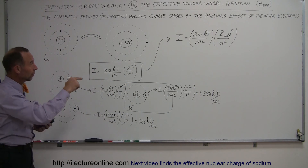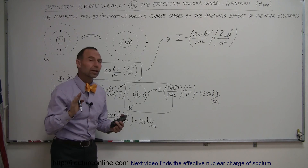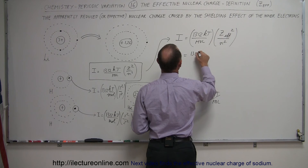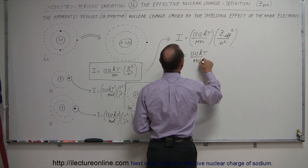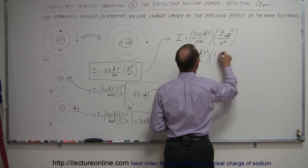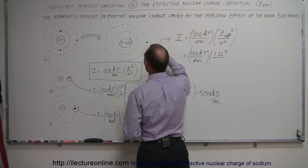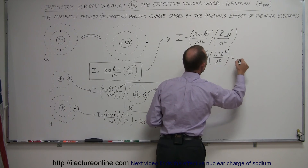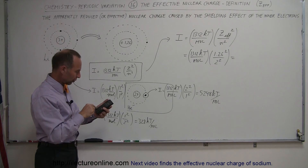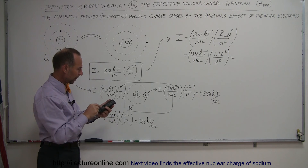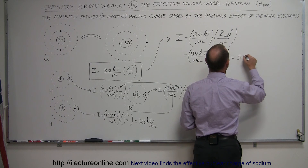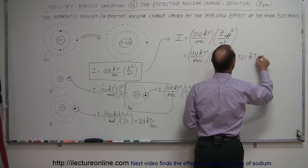Plugging in Z_eff = 1.26 and n = 2 (since the electron is in the second energy level): IE = 1312 × 1.26²/2² = 1312 × 1.5876/4, which equals approximately 521 kilojoules per mole.